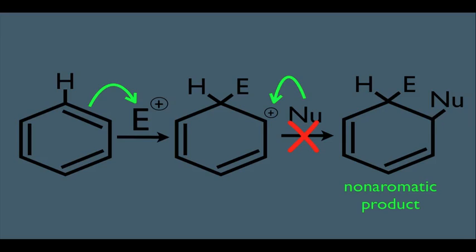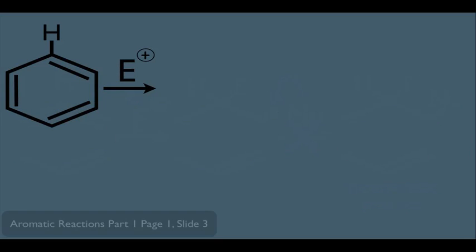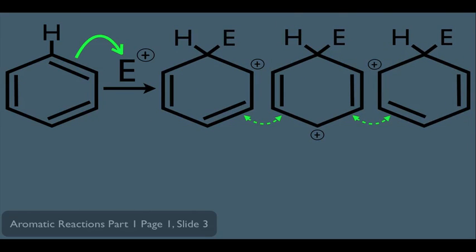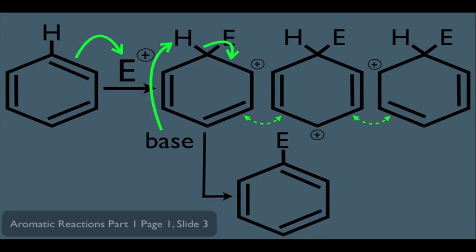Going back to electrophilic aromatic substitution: the first step is the double bond attacks the electrophile, generating three resonance structures. But the reaction ends differently — a base abstracts the hydrogen, the electrons come down to create a double bond, and the aromatic product forms. This is essentially an elimination reaction: we eliminate that hydrogen and create a double bond, restoring aromaticity. This is why EAS takes this pathway instead of behaving like a typical alkene.